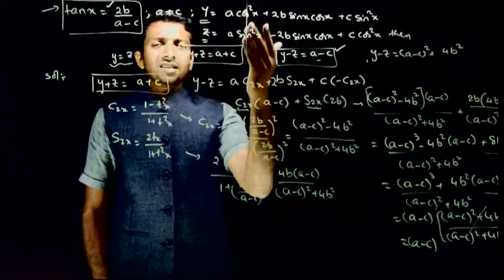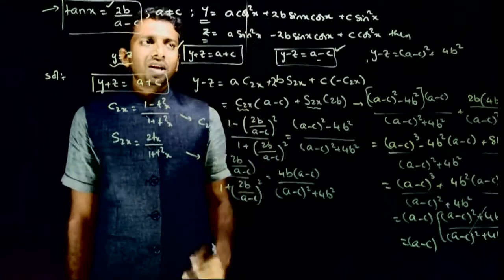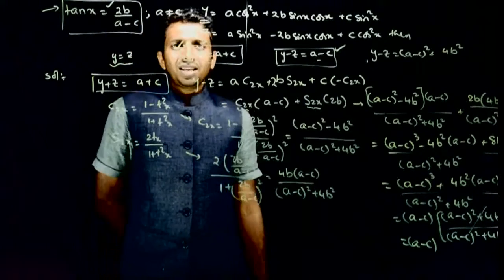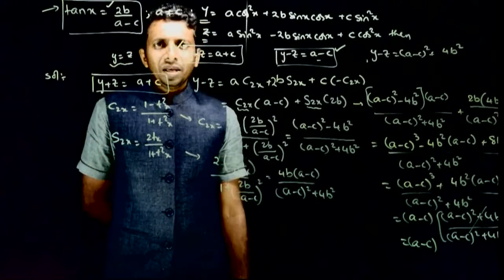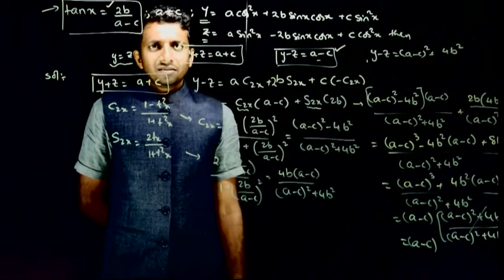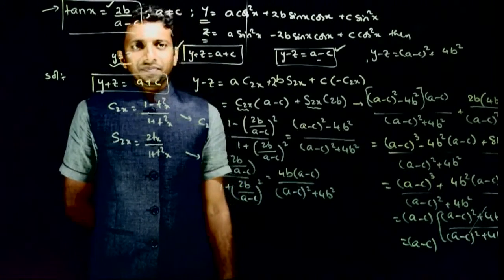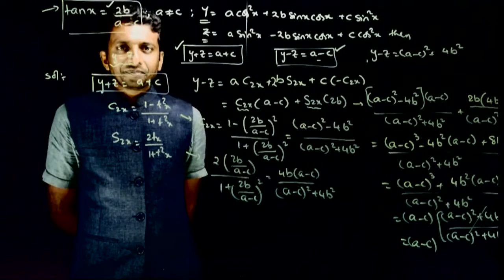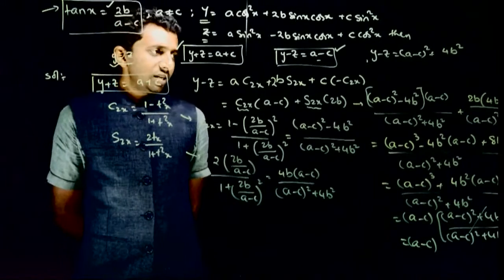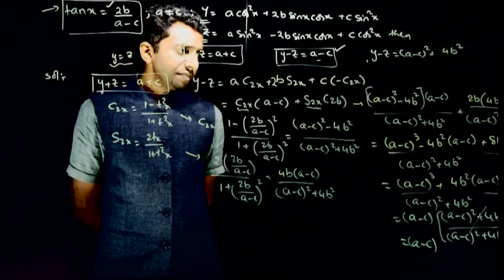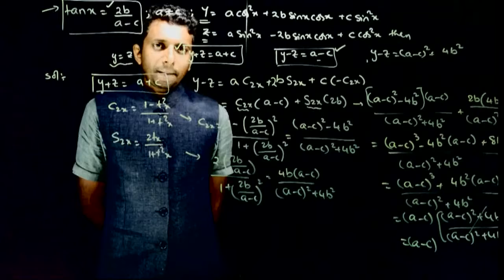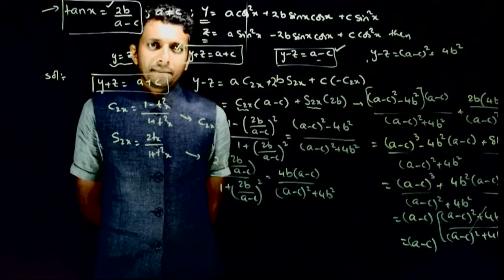Since y minus z equals a minus c and not zero, y is not equal to z, so we do not need to check that option. The correct answers are: y plus z is equal to a plus c, and y minus z is equal to a minus c. Thank you.